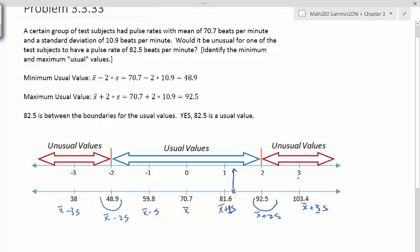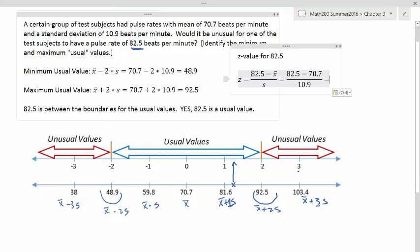But let's redo this problem using another method where we find the z-value. Let's say over here we want the z-value for 82.5. You put that x-value that you have, you subtract x-bar, and then you divide the whole thing by s. So it will be 82.5 minus 70.7 divided by 10.9. So let's figure that out in the calculator.